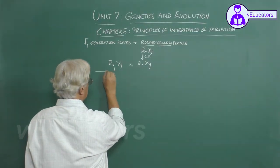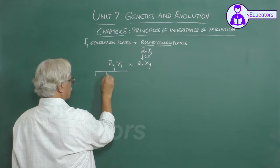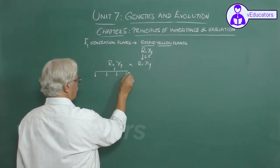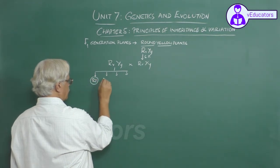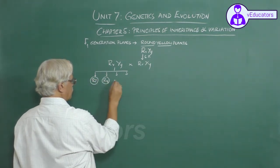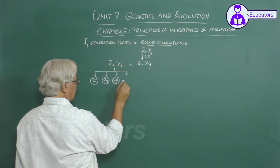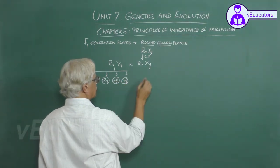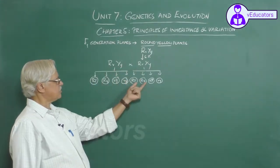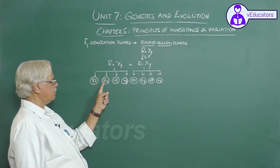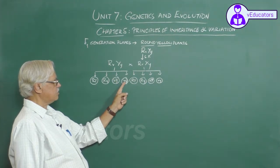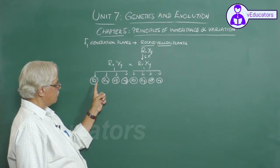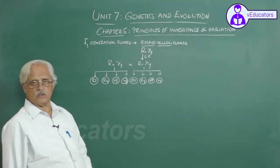Four types of gametes are possible: capital R capital Y, capital R small y, small r capital Y, and small r small y. So four types of gametes in each case. Similarly, 4 into 4 gives 16 combinations are possible.